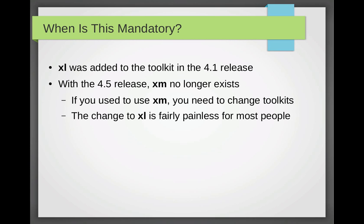When does this become a mandatory changeover? XL was introduced with the 4.1 release of Zen Project. With 4.5, XM no longer exists — so if you're using 4.5 or beyond, you must work in XL, or you must use libvirt or Xappy. In the interim releases 4.1 through 4.4, you can use either XM or XL. If you're in that state right now and you want to get used to working with XL, disable the Xend daemon and you can start using XL right away without any sort of upgrade whatsoever. For most people the changeover to XL is painless — modify existing scripts to use XL instead of XM, but the syntax is the same and it just rolls forward.